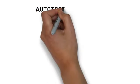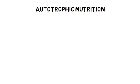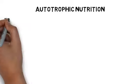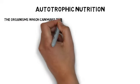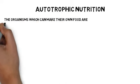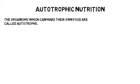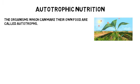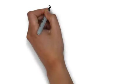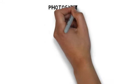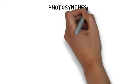The first mode is autotrophic mode of nutrition. Organisms which make their own food are commonly called autotrophs, such as green plants. How do they do it? By the process of photosynthesis.